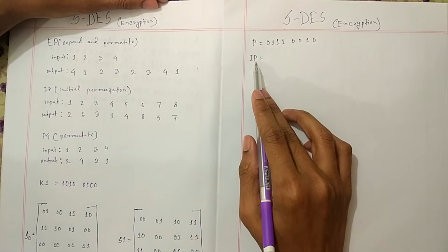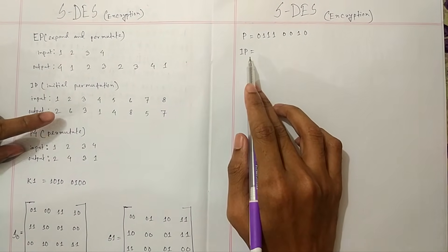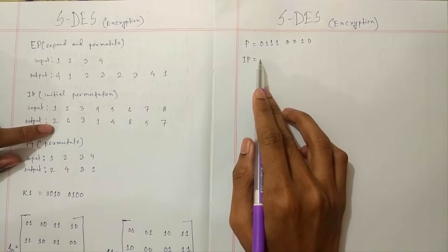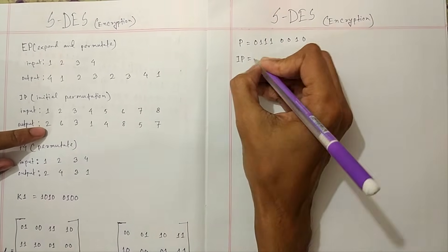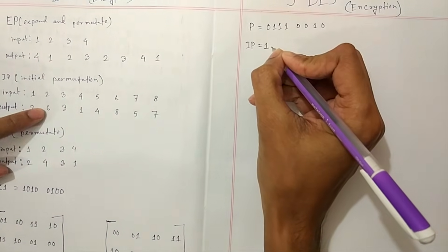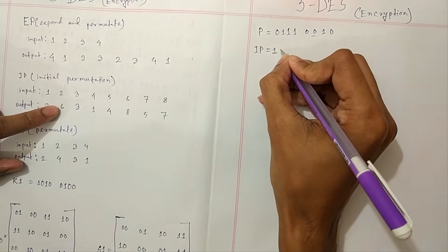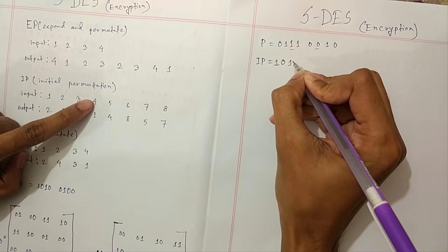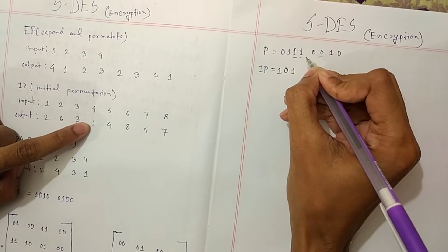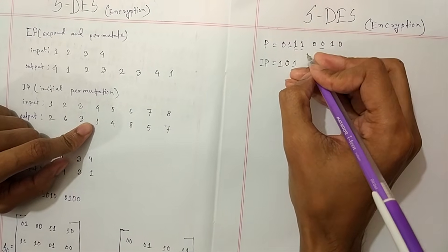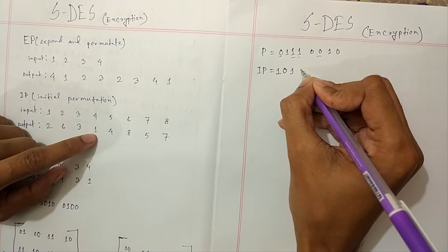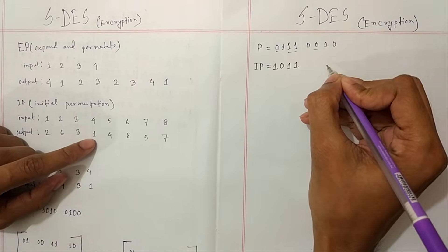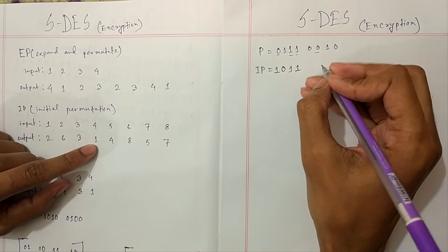For the IP table, output 2 goes to input 1. We map positions: 2→1, 6→2, 2→3, 2→4, 3→5, 2→6, 3→7, 4→8. In the same process we evaluate the next 4 values which give us 1 0 0 1.